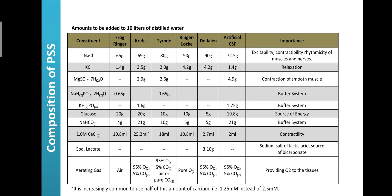The frog Ringer solution is prepared by taking 65 g of sodium chloride, 1.4 g of potassium chloride, 0.65 g of sodium dihydrogen phosphate, 20 g of glucose, 4 g of sodium bicarbonate, and 10.8 ml of 1-molar calcium chloride, along with aeration or air supply. These are all added for preparation of 10 liters of frog Ringer solution in distilled water.